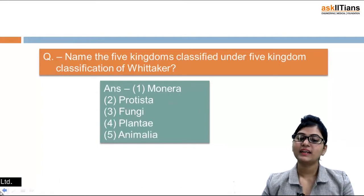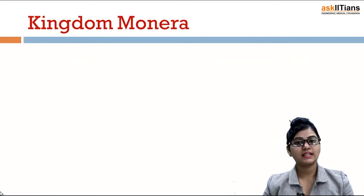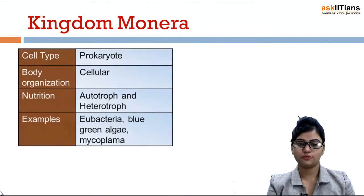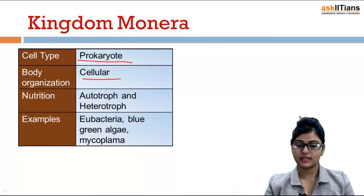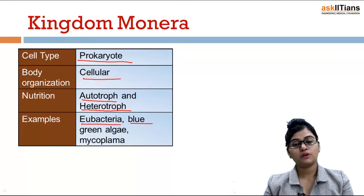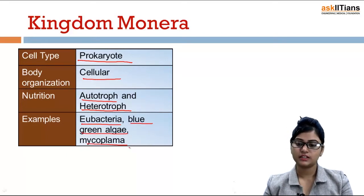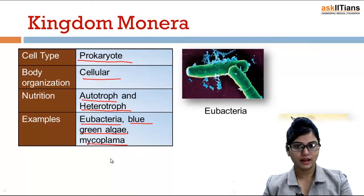Let's take kingdom Monera first. Cell type in kingdom Monera is prokaryotic. Body organization is cellular. Nutrition is either autotroph or heterotroph. Examples include eubacteria, blue-green algae, and mycoplasma.